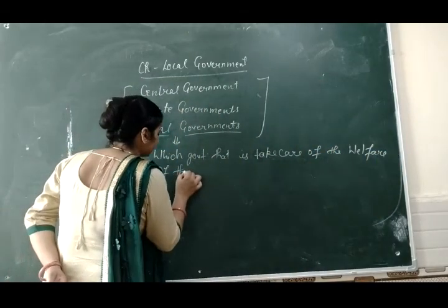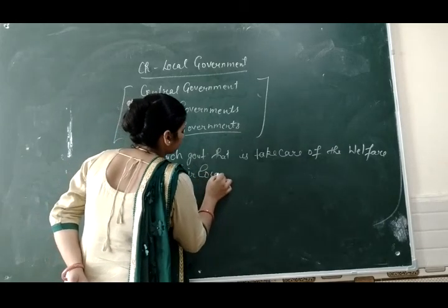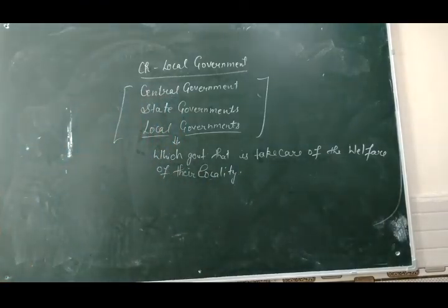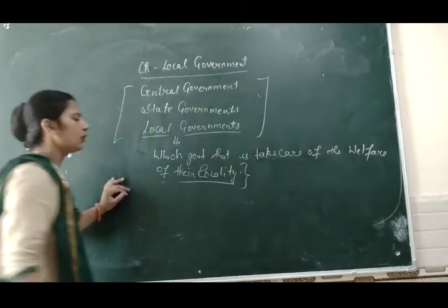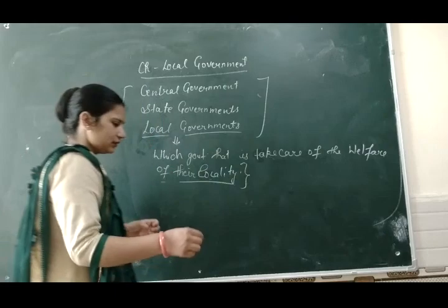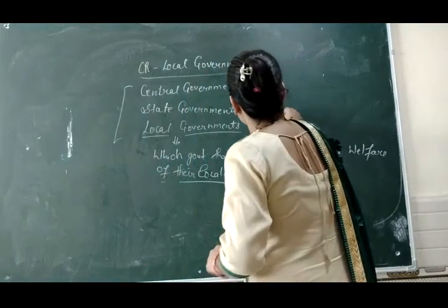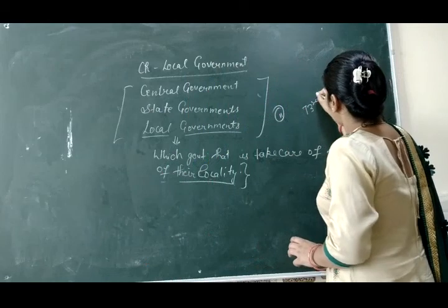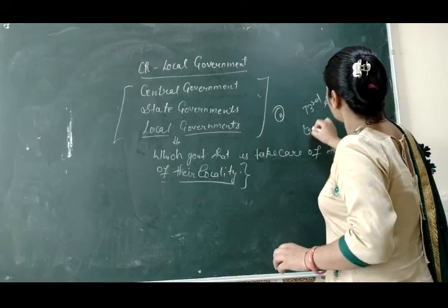The local government takes care of their own local community. Local government at the village and district level is closest to the common people. There are three tier systems in India according to the 73rd Amendment and 74th Amendment.